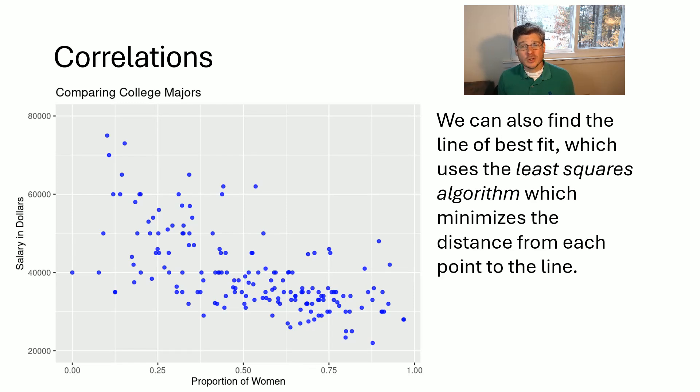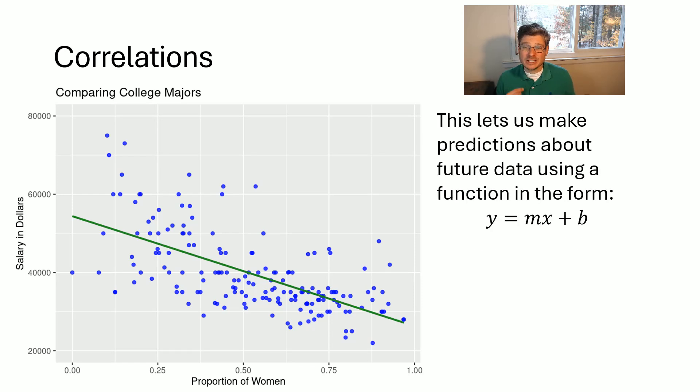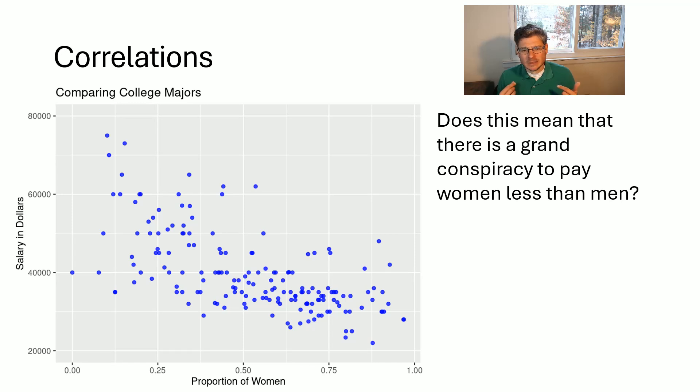And so, we can also find a line of best fit using technology, typically, which uses the least squares algorithm. And that minimizes the distance from each point to the line. This is also very useful. And I had it calculated here. So, this is what the line looks like. Basically, it takes every single ordered pair, every single dot on that plot. And this is the line that minimizes that distance from every single point to that line. This lets us make predictions about future data points using just our very simple y equals mx plus b form, which makes it very powerful for making predictions.